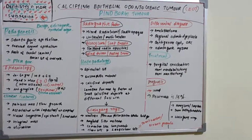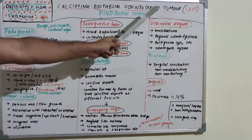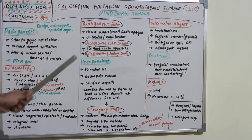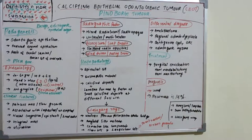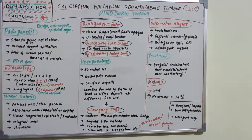Hello everyone, welcome back to another session on dentistry and more. Today we have a new section in oral pathology: Calcifying Epithelial Odontogenic Tumor, or CEOT, which is widely known as Pindborg tumor. Last sessions we covered various syndromes — around 9 to 10 — and now we are moving on to the tumor section, and the first one is CEOT or Pindborg tumor.